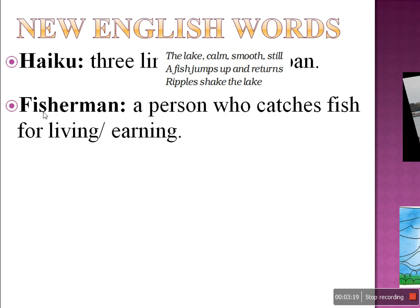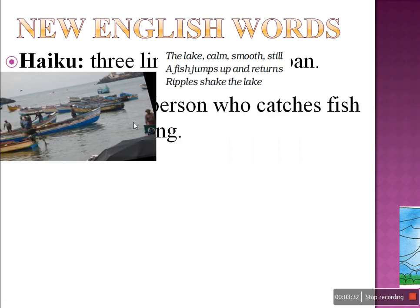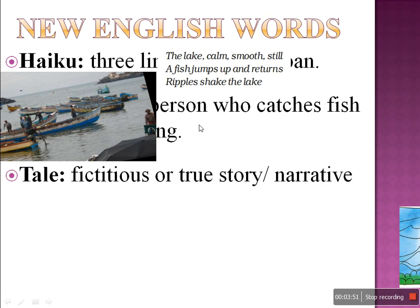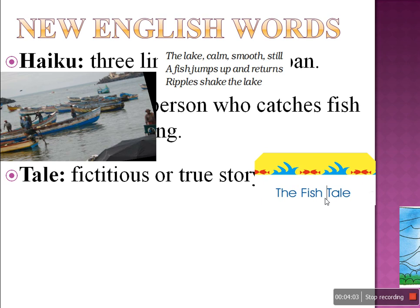Next: Fisherman. Who is a Fisherman? A person who catches fish for living or earning. You can see many boats in the sea with many people on them. They are having nets and they go into the ocean, catch the fish, come back by boat, and sell the fish for their earnings. Next word is Tale. Tale means a fictitious story, or true story, or narrative. You must have heard about Fairy Tale — here is the Fish Tale, which means the story of fish.